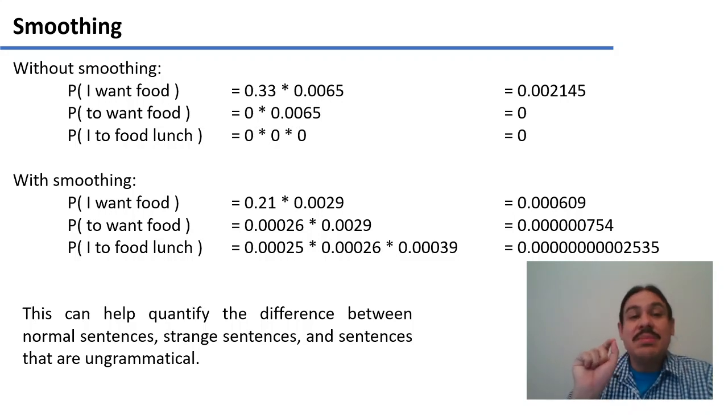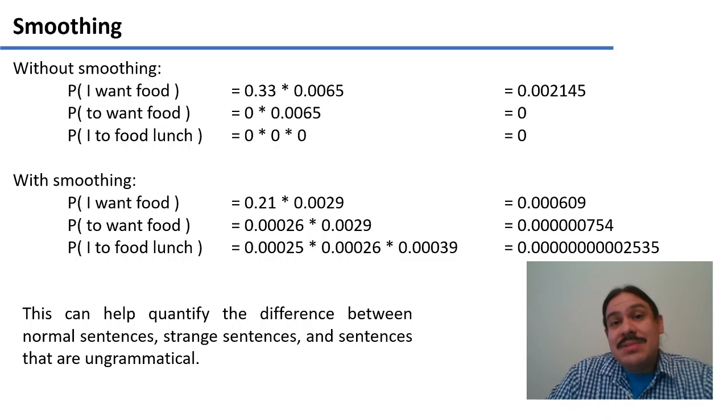Because there's some combination that the system has never seen before. To want or to food. And the n-gram model as is cannot distinguish between these two types of sentences. Between sentences that are possible but unseen and sentences that are ungrammatical. With smoothing, you can have a distinction.